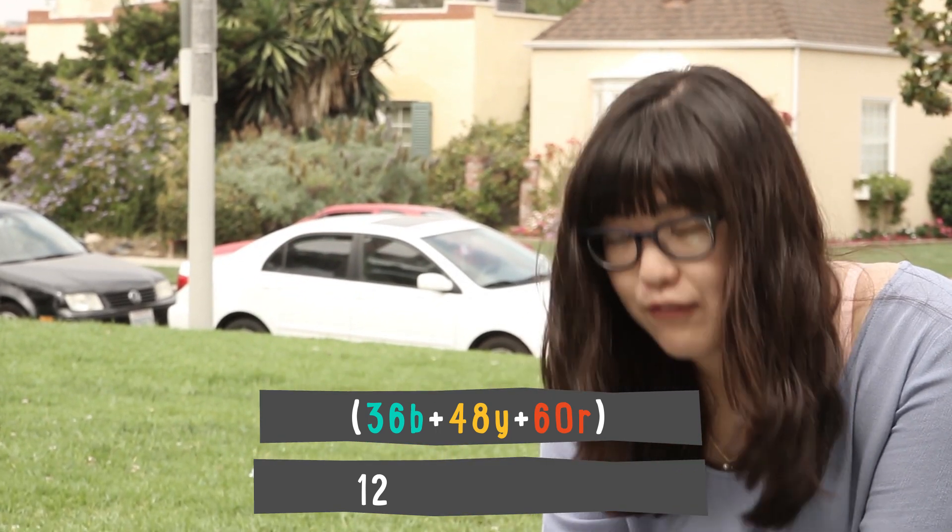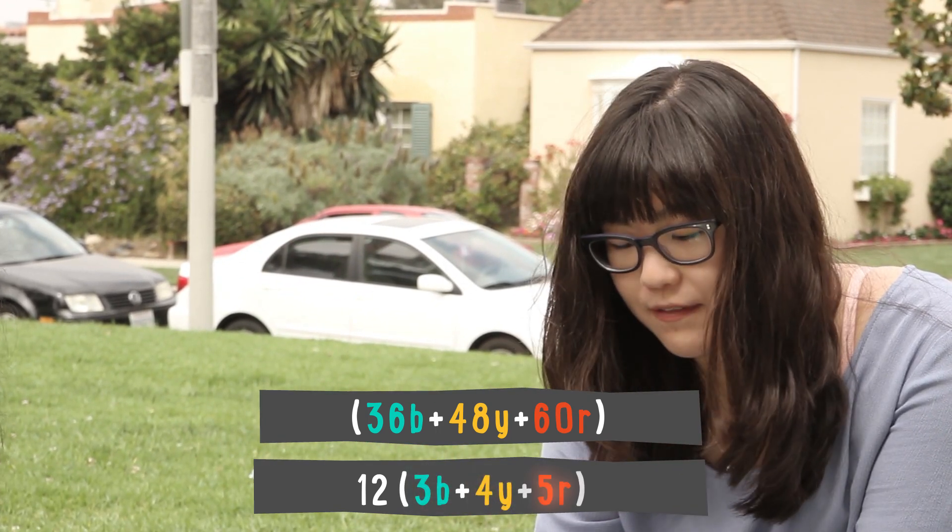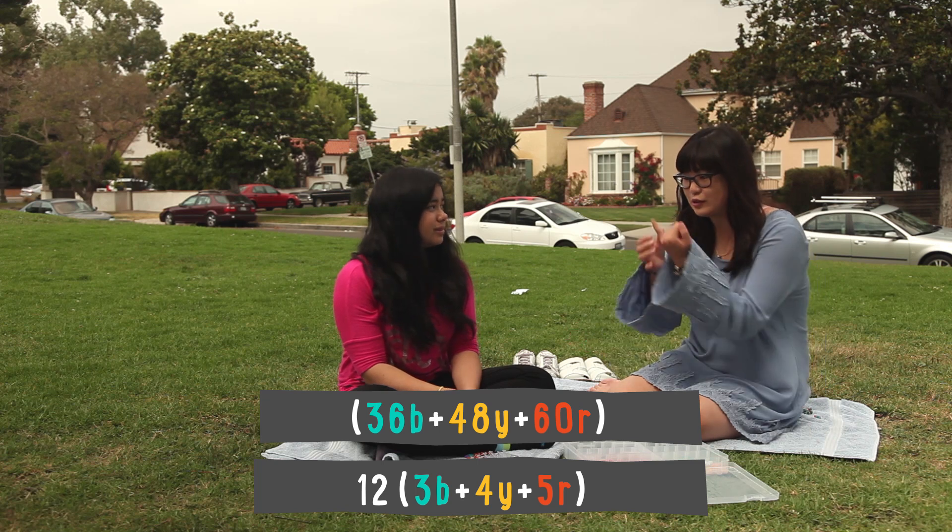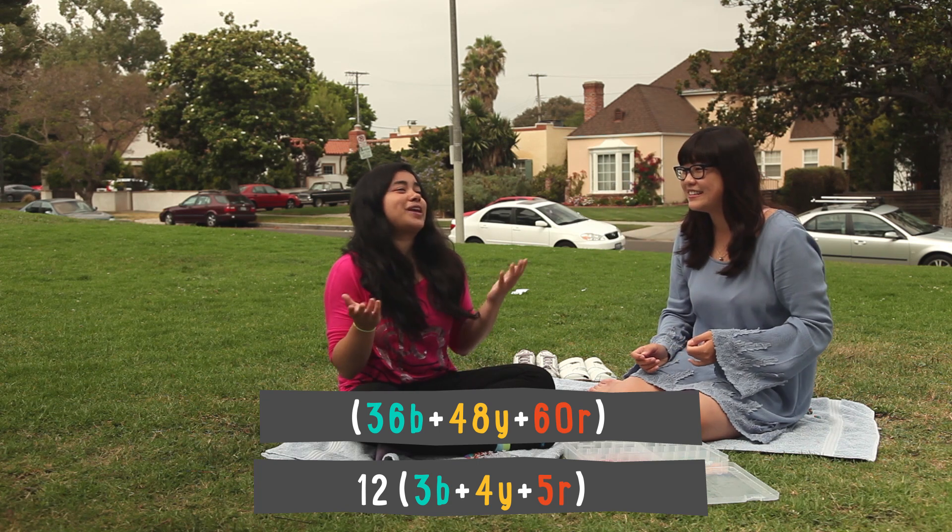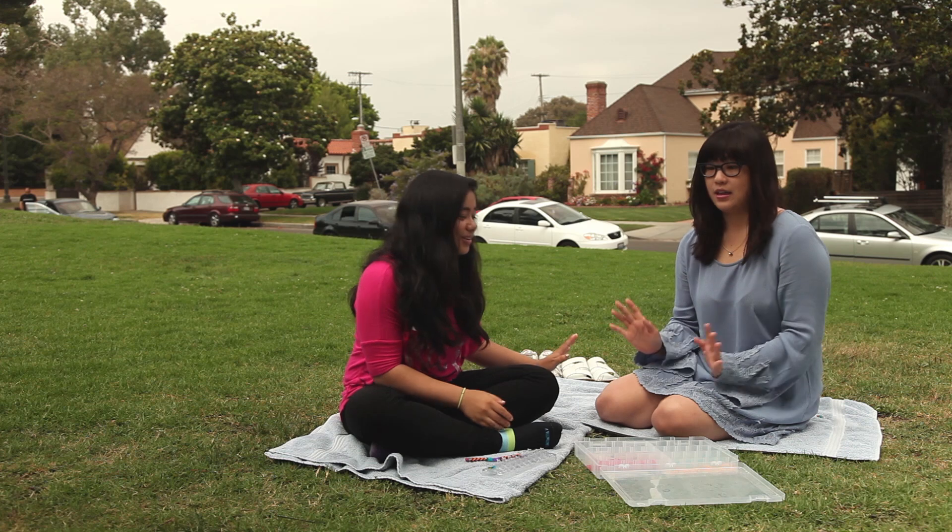But each bracelet would only have three blue bands, four yellow bands, and five red bands. They'd be super tiny! And you're super skeptical! I'm gonna prove you wrong, okay? Whoa!